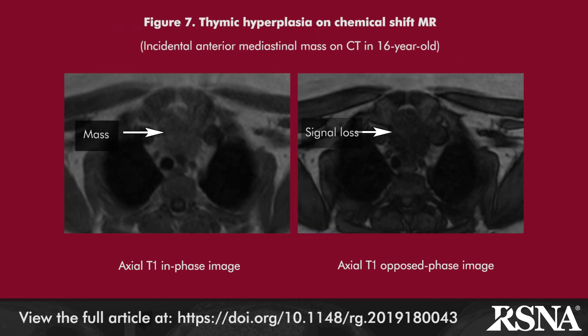Thymic hyperplasia and a minority of lipid-poor angiomyolipomas that cannot be confidently characterized as such on CT are additional indications for chemical shift MR.